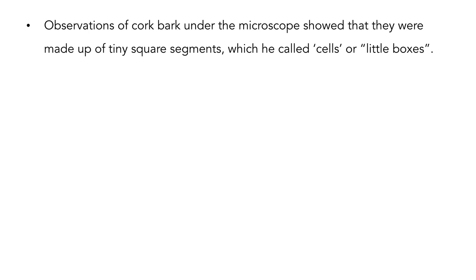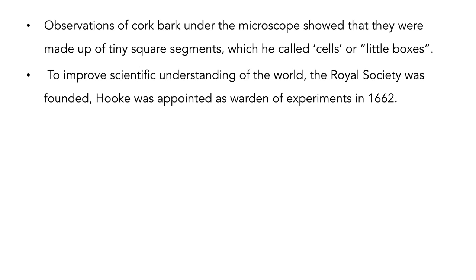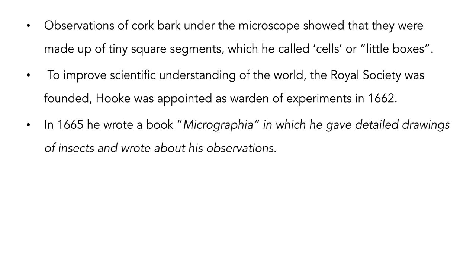Hooke's observations included the bark of cork, in which he observed tiny square segments that he called cells or little boxes. The Royal Society of London was founded to improve scientific understanding of the world, and Robert Hooke was appointed as supervisor of experiments in 1662. In 1665, Robert Hooke wrote Micrographia, in which he gave detailed drawings of insects and described his observations.